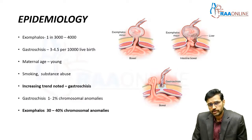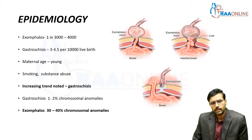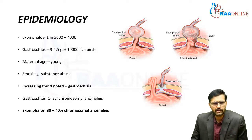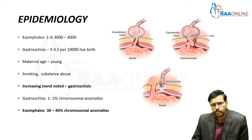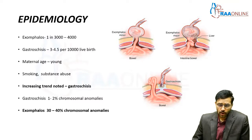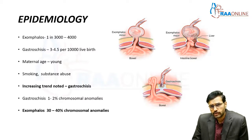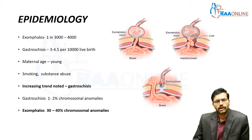Coming on to the epidemiology of gastroschisis and exomphalos: exomphalos has an incidence of 1 in 3000 to 4000 live births, whereas gastroschisis has an incidence of 3 to 4.5 per 10,000 live births. One of the predisposing factors to these abdominal wall defects is young maternal age — young mothers are more prone to have infants with exomphalos or gastroschisis. There is an increasing trend noted worldwide for gastroschisis, which is now overtaking exomphalos as the most common abdominal wall defect in newborns.